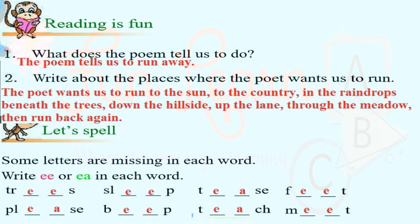Reading is fun. What does the poem tell us to do? The poem tells us to run away. Write about the places where the poet wants us to run. The poet wants us to run to the sun, to the country, in the raindrops, beneath the trees, down the hillside, up the lane, to the meadow, and then run back again.